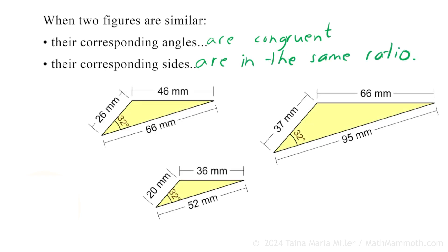Let's look at these triangles, for example. These are similar triangles. They are of different sizes, but they have the same basic shape. You can see that this 32-degree angle is the same in all of them. Also, the other corresponding angles would be congruent. This angle here — however much it measures, it's an obtuse angle — it's the same angle measure in all three triangles, and also for the third angle.